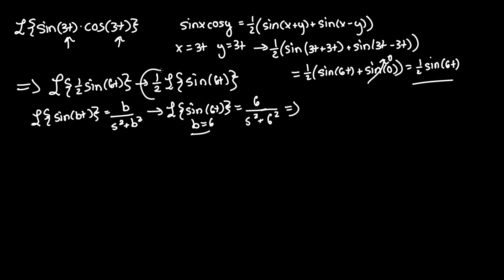And don't forget to apply the one-half coefficient out in the front. And the one-half can cancel with the 6 to become 3. And that's our final answer. 3 over s squared plus 6 squared.